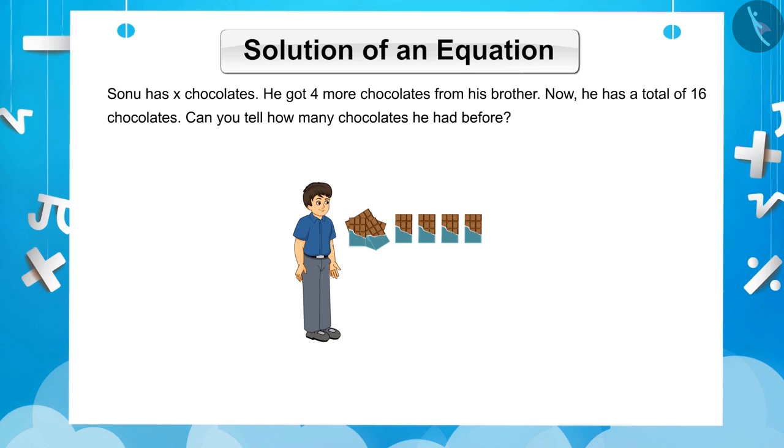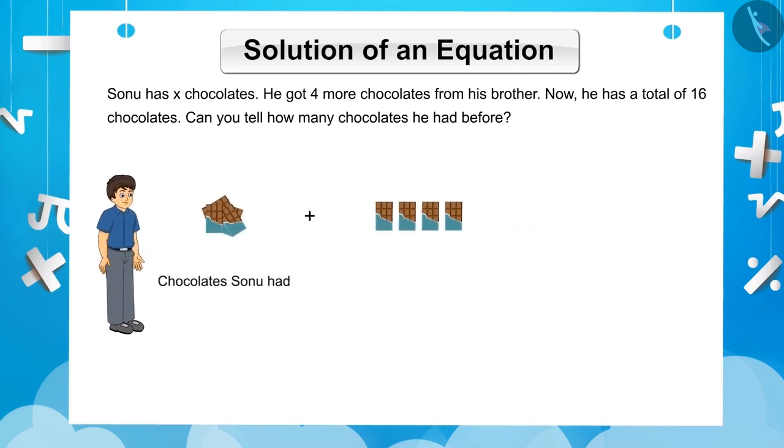Let us solve this together. We already know that the sum of the number of chocolates Sonu had and the number of chocolates his brother gave him gives the total number of chocolates. We can express it by this equation: X plus 4 is equal to 16, where X is a variable that represents the number of chocolates Sonu had before, whose value we need to find out.